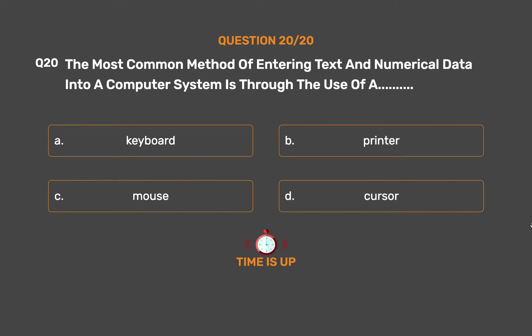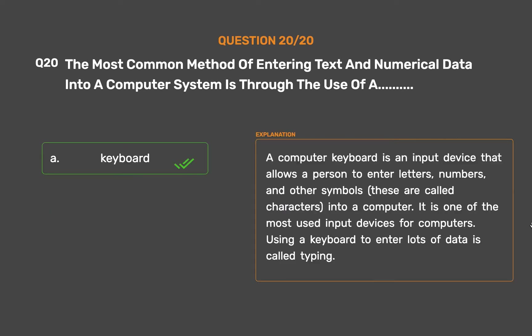The correct answer is Option A: Keyboard. A computer keyboard is an input device that allows a person to enter letters, numbers, and other symbols — called characters — into a computer. It is one of the most used input devices for computers. Using a keyboard to enter lots of data is called typing.